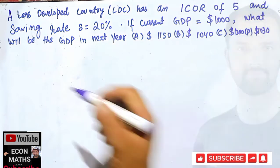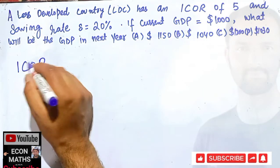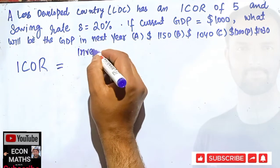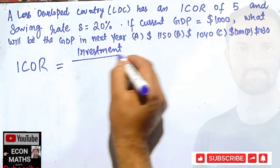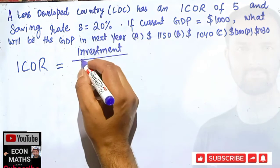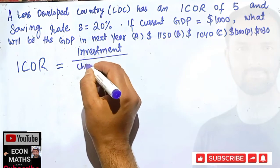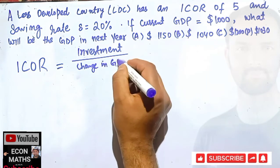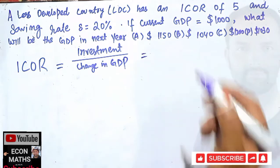Our ICOR, that is incremental capital output ratio, is simply equal to Investment upon change in GDP. So I will write here change in GDP, or increase in GDP.